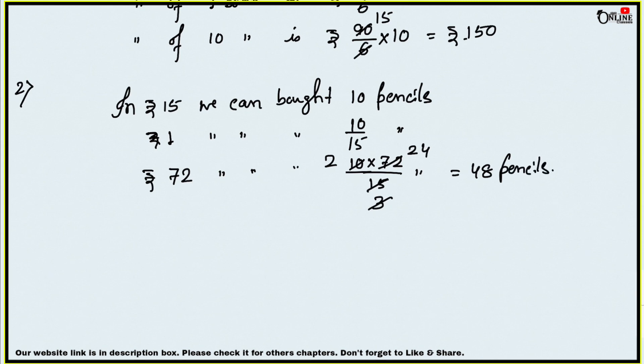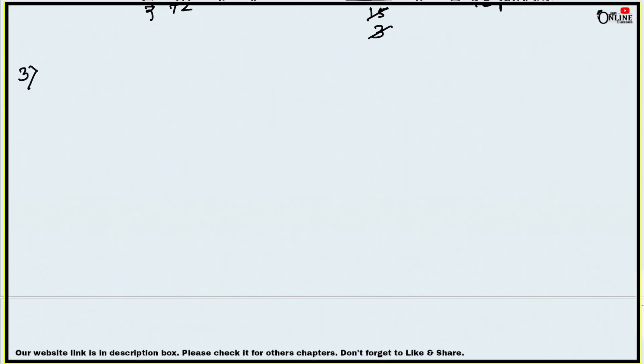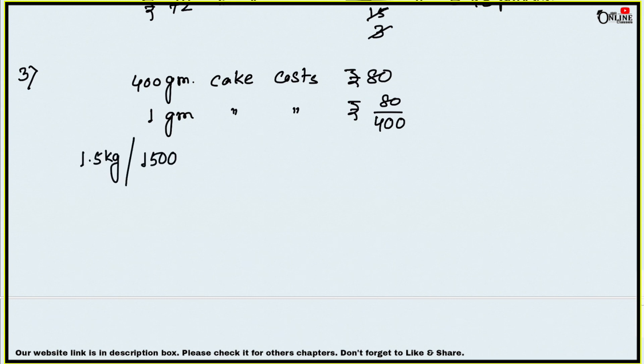Number three: 400 grams cake cost rupees 80. How much would a 1.5 kg cake cost? 400 gram cake costs rupees 80. 1 gram cake costs 80 by 400. 1.5 kg means 1500 gram cake costs 80 by 400 into 1500. That equals 300 rupees. That is your answer.